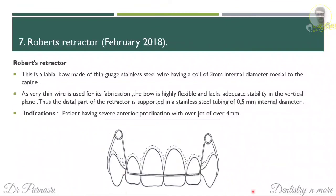You can also write about the steps in construction — how you make it in self-cure and heat-cure. The next question is Roberts retractor. It is basically a labial bow made up of a thin gauge wire, usually 0.5 mm. It has coils of 3 mm internal diameter mesial to the canine. The indications are when there is severe proclination of anterior teeth, usually when the overjet is more than 4 mm. It is mainly used for retraction of anterior teeth because it is very flexible.